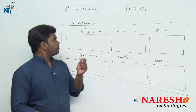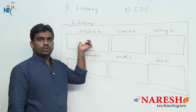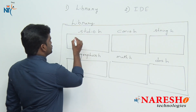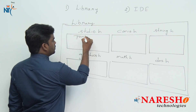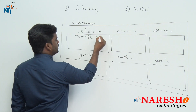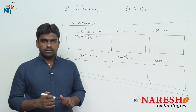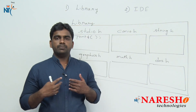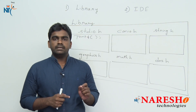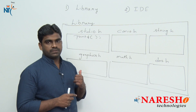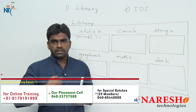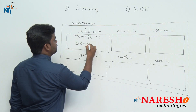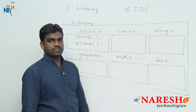stdio.h is the standard input output header. It contains some standard functions. To print a message on the console, the printf function is already ready — no need to write the code again. If you want to read something from the end user in your C application for scanning purpose, the scanf function is provided as a predefined function.